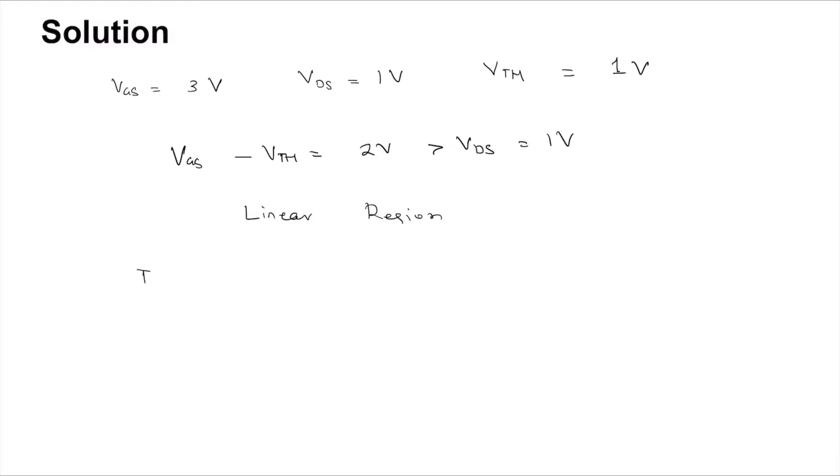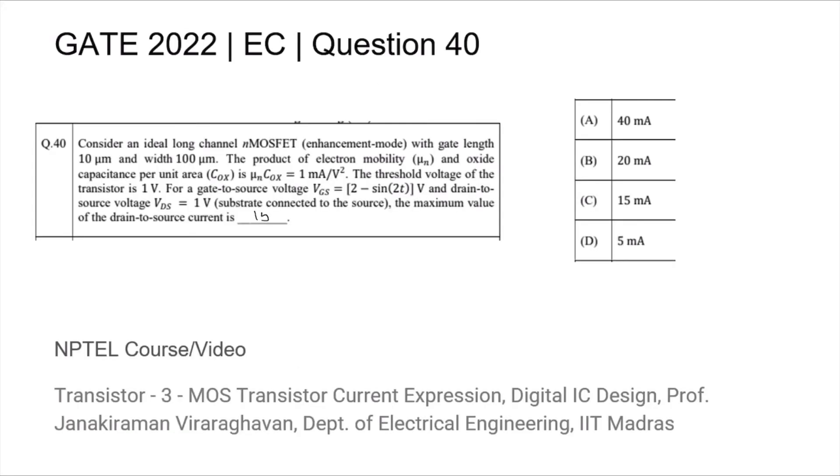That means that we have the current ID equal to μn·Cox times W by L times (VGS minus VTH minus VDS by 2) times VDS. This is for the long channel device. Now we substitute the values: 1 milliamp per volt squared times W by L is 100 micro by 10 micro, VGS minus VTH is 2 volt, VDS is 1 volt, 1 volt by 2 times VDS is 1 volt. If you solve for this you will get that the answer is 15 milliamps, that is option C.